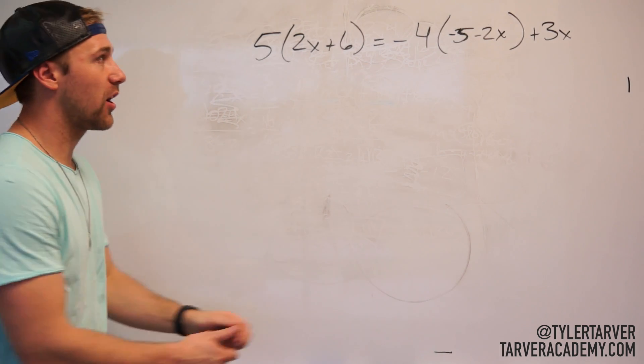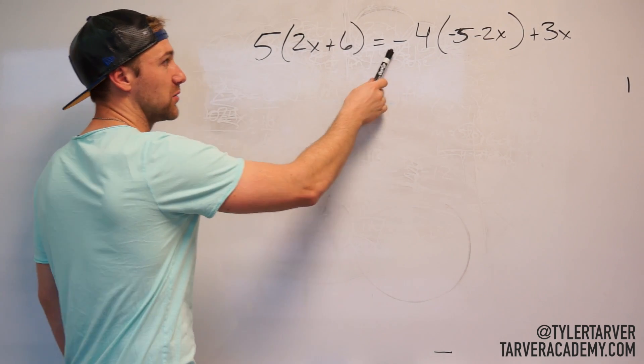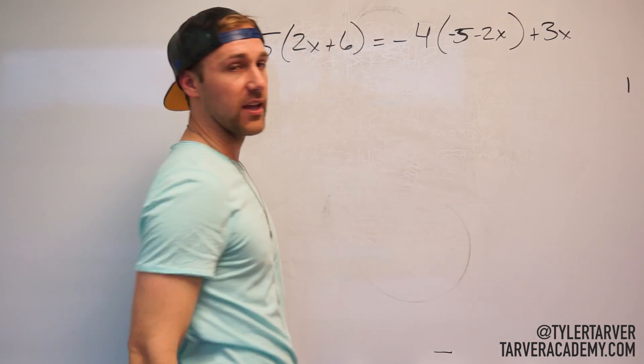Okay. So let's look at our equation. We've got 5, parentheses, 2x plus 6, close parentheses, equals negative 4, parentheses, negative 5 minus 2x, close parentheses, plus 3x.